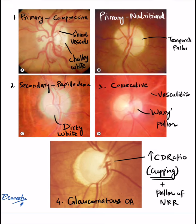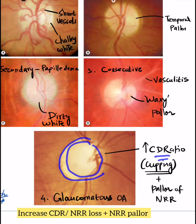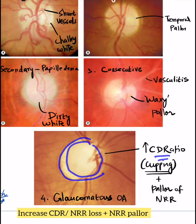In glaucomatous optic atrophy, we can see an increase in the cup-disc ratio along with pallor of the neuroretinal rim. So along with the cupping, there is going to be pallor of the NRR in glaucomatous optic atrophy.